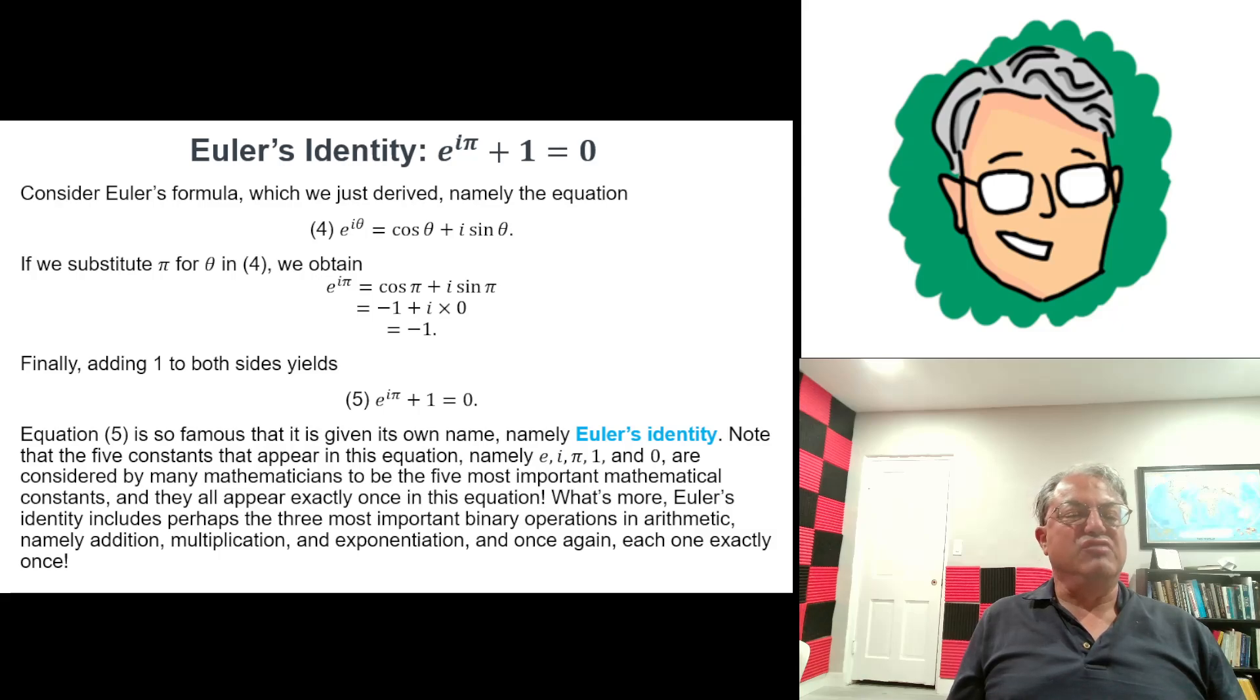So what's so remarkable about Euler's identity? Well, I think there's a couple things that are really remarkable about it. First of all, you notice that it includes five constants. There's exactly five numerical constants in this equation, namely e, i, π, 1, and 0. Well, those are considered by most mathematicians to be probably the five most important constants in all of mathematics. And they all appear in one equation, each one exactly once.